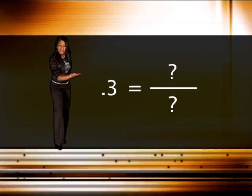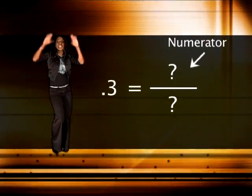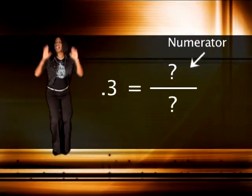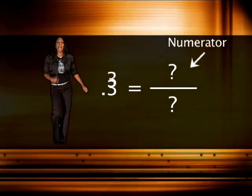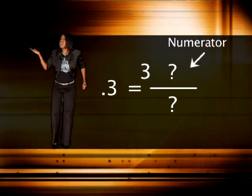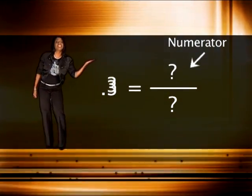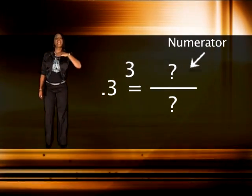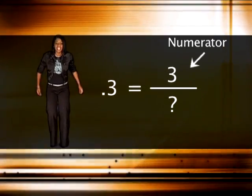Let's cover rules for the top number, the numerator. Remove the decimal point from the original number and place it as a numerator.